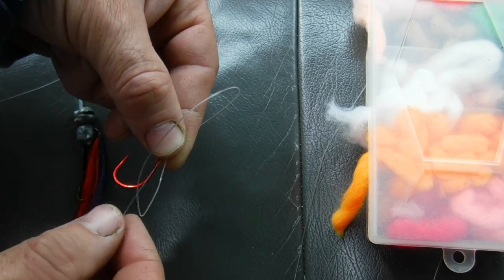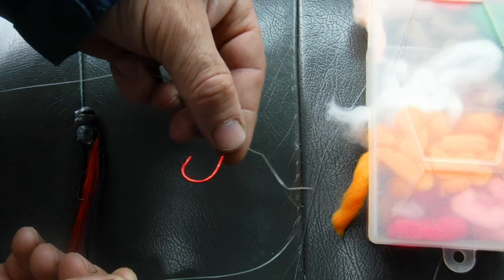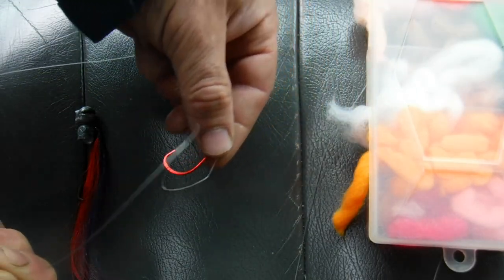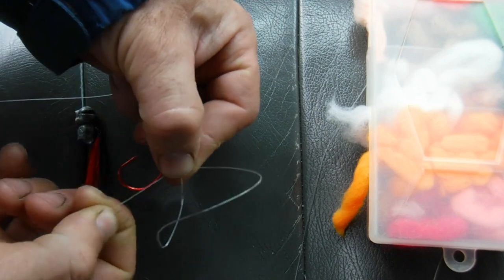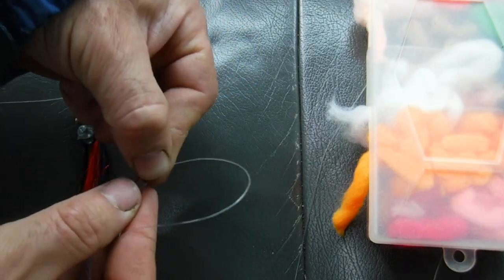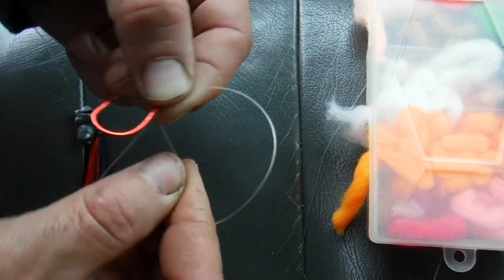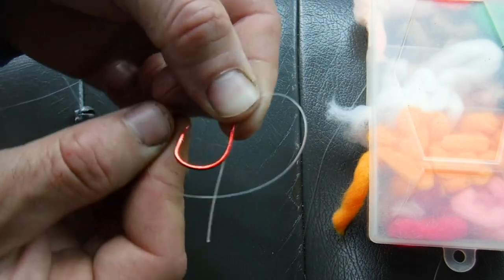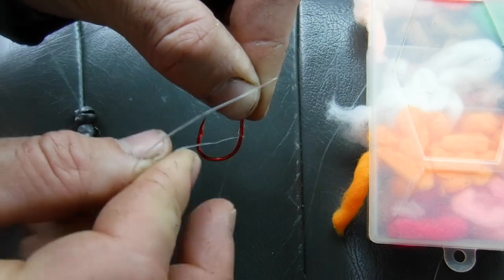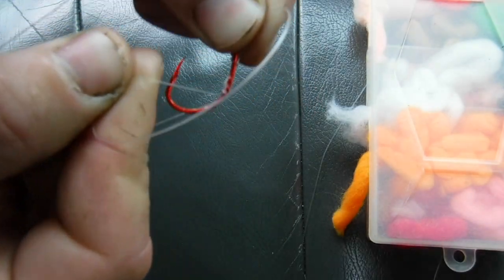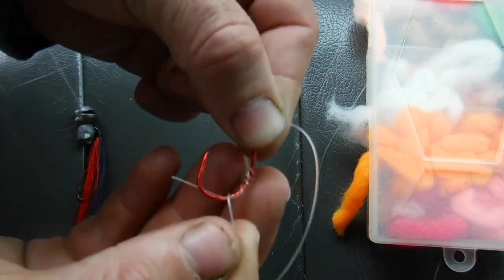If I need to pull some extra line here, I'm pulling from the body not the tag. I need that tag to hang out about a half inch to an inch past. So I make my little loop. I'm going to take that loop that's pinched. And again I pull that tag end back. And then I'm going to just spin it around and pinch. So now I have this big loop. I'm going to take that loop and spin it four to six times around that tag end.